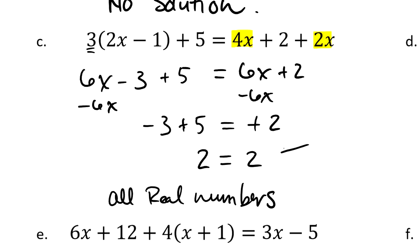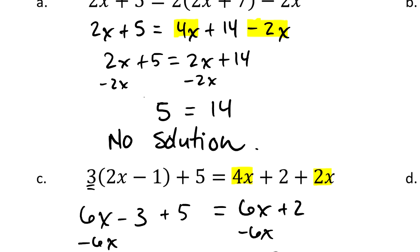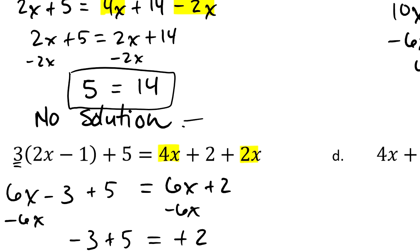This is not a contradiction. This is a statement that's always true. That's why we have all real numbers. Above, we had a statement that was a contradiction. And that's why we had no solution. Let's look at D.